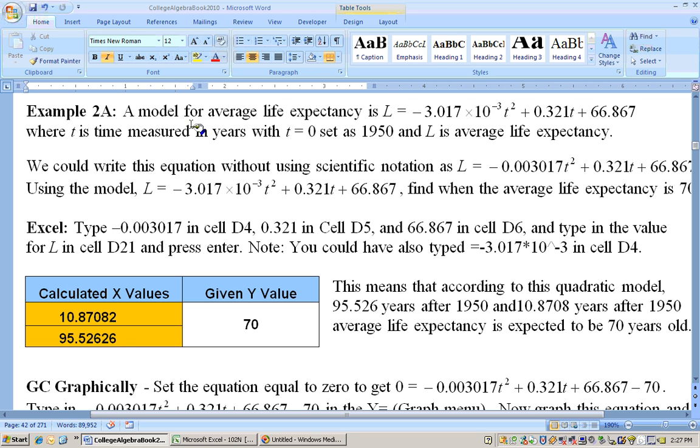Okay, on this problem it says the model for average life expectancy is L equals negative 3.017 times 10 to the negative third T squared plus 0.321T plus 66.867. Sounds extremely messy, but really this is just a number in scientific notation, so it isn't that bad. Now stop being a wussy and get going! Let's get going then.